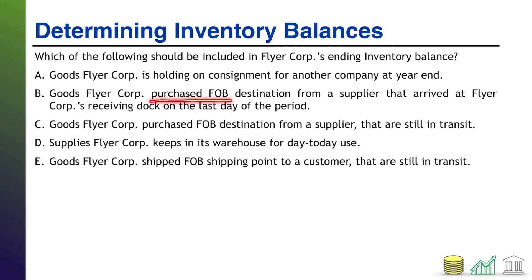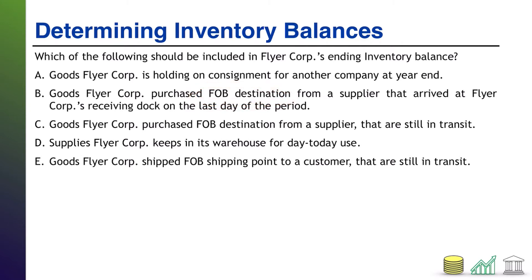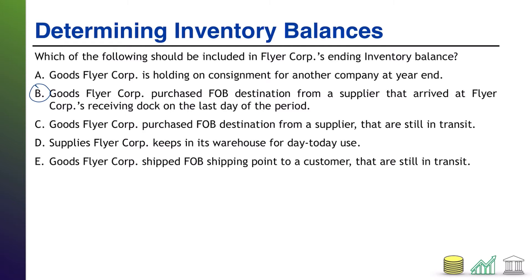Option B: Goods FlyerCore purchased FOB destination from a supplier that arrived at FlyerCore's receiving dock on the last day of the period. We are purchasing the goods, so they are coming to us — we are the destination. They were shipped FOB destination, which means we don't take legal ownership until they get here. They arrived at our receiving dock, so ownership changed hands on the last day of the period, within the current period. Therefore, this should be included in our inventory.